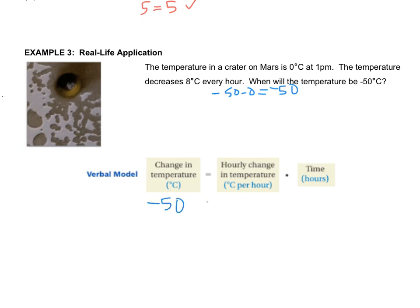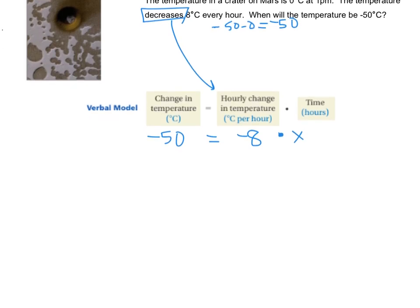And, that's equal to the hourly change in temperature which it says is 8 degrees but it's decreasing every hour. So, a decrease of 8 is actually negative 8. It's decreasing. It's going down. Times the time. I'm going to use a dot because I don't want to use an x. That will look like another variable. And, they ask us for the time in hours. We can just use x or t or h. Whatever you want to use. So, now I've got this really simple equation. Negative 50 equals negative 8h. That is not a subtraction sign. It's multiplication of a negative.